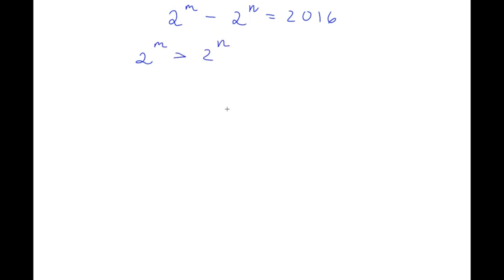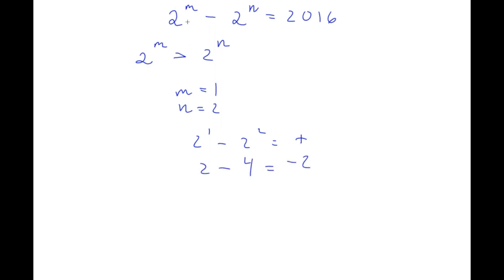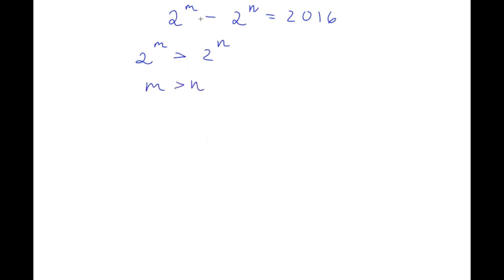Because, hypothetically, if m was equal to 1 and n was equal to 2, we would have 2 to the power of 1 minus 2 squared. 2 to the power of 1 is 2, minus 2 squared is 4, and this equals negative 2, which is a negative number. So because 2 to the power of m is greater than 2 to the power of n, this also means that m is greater than n, because both have bases of 2.